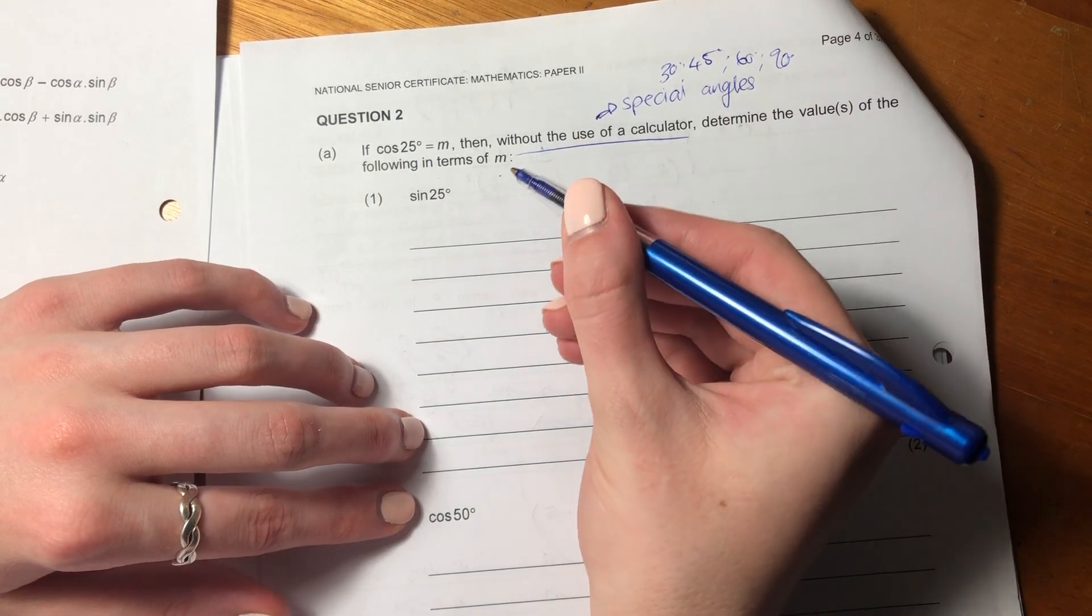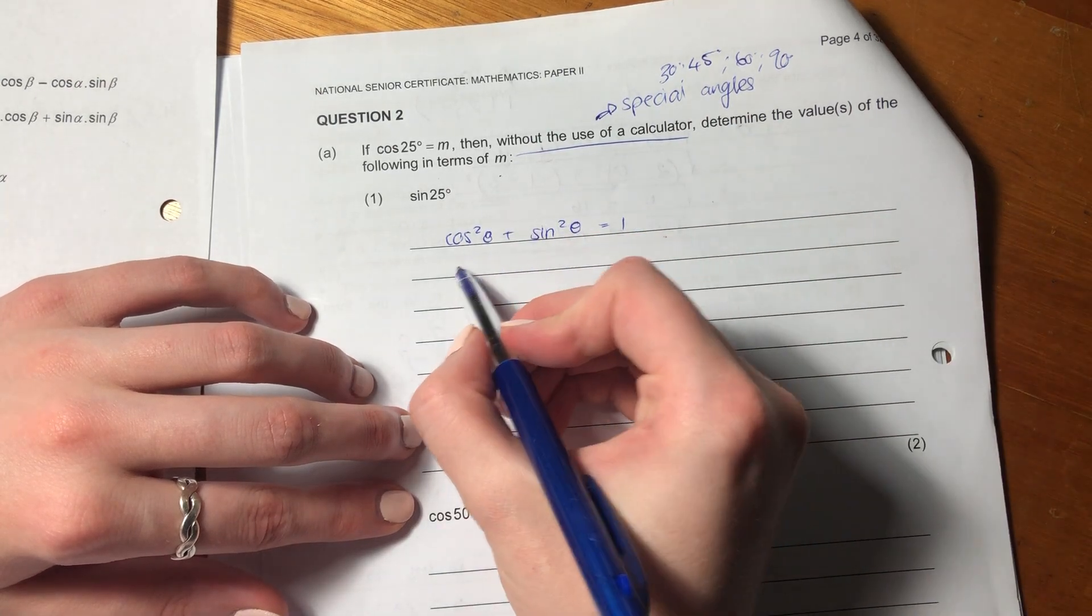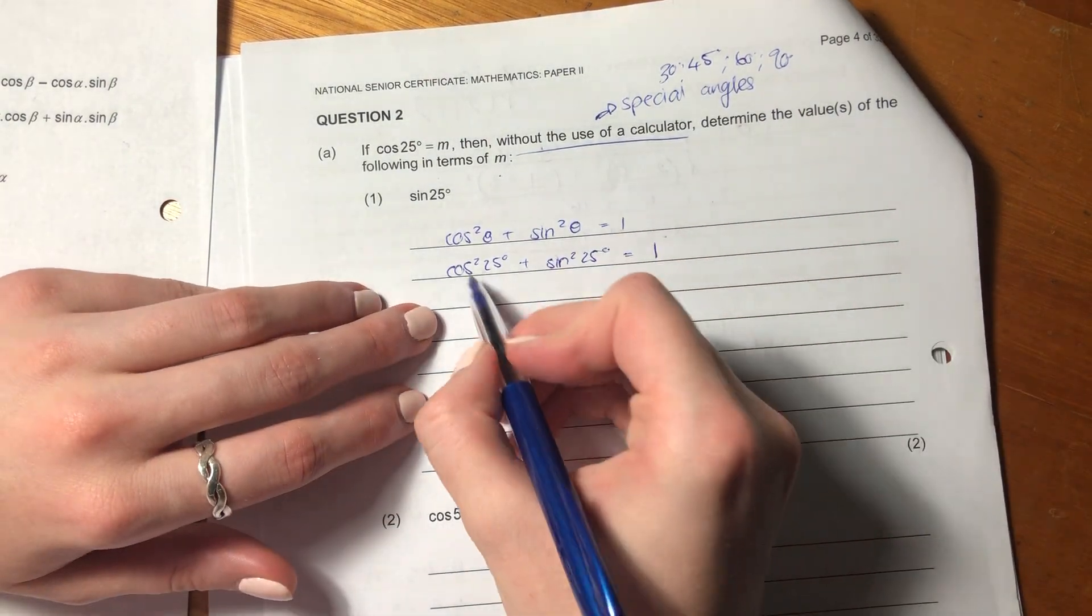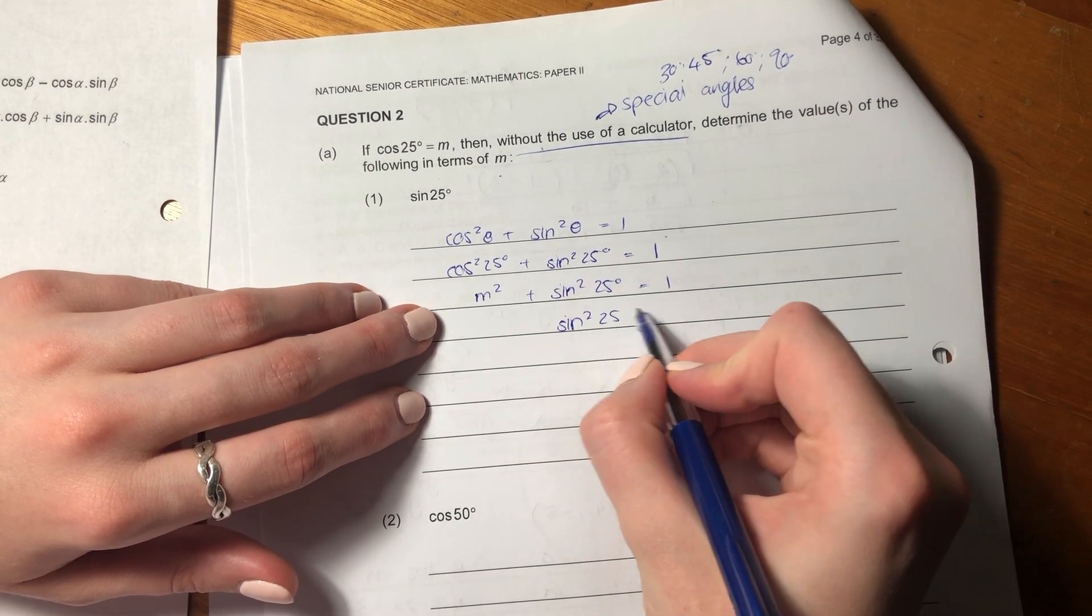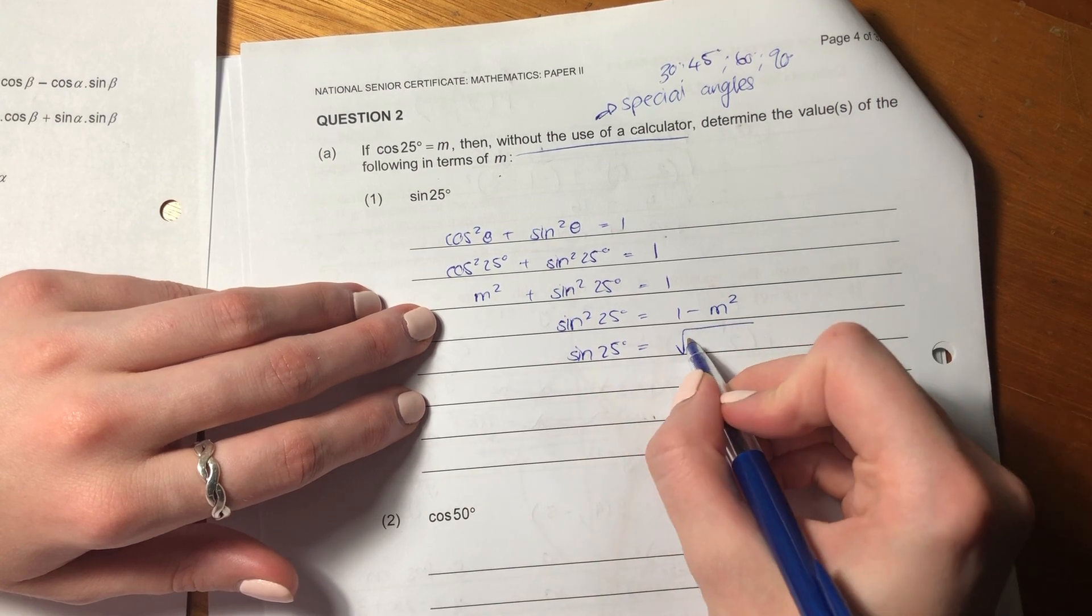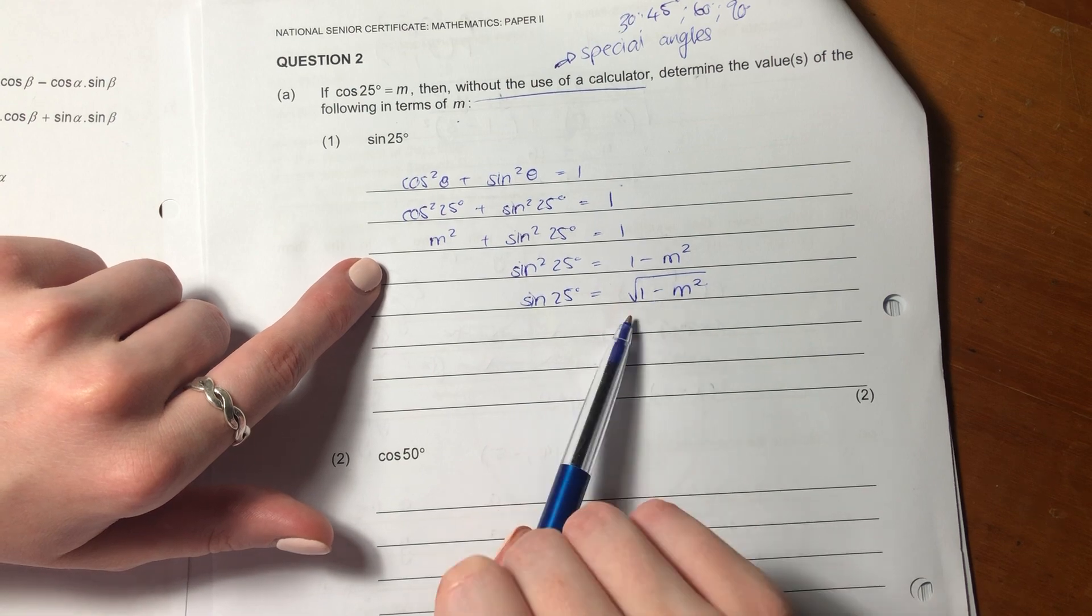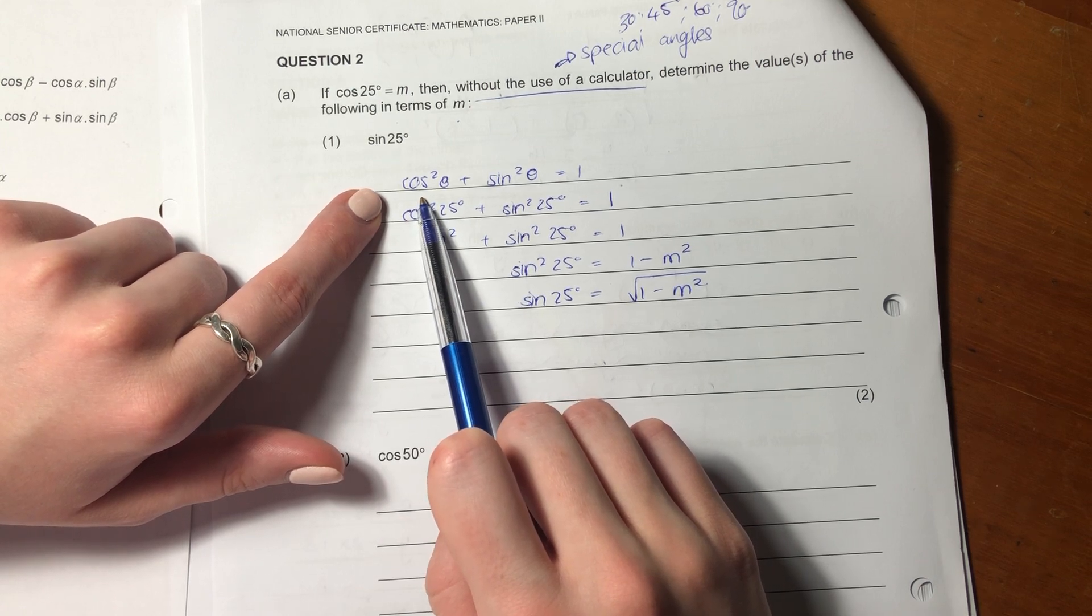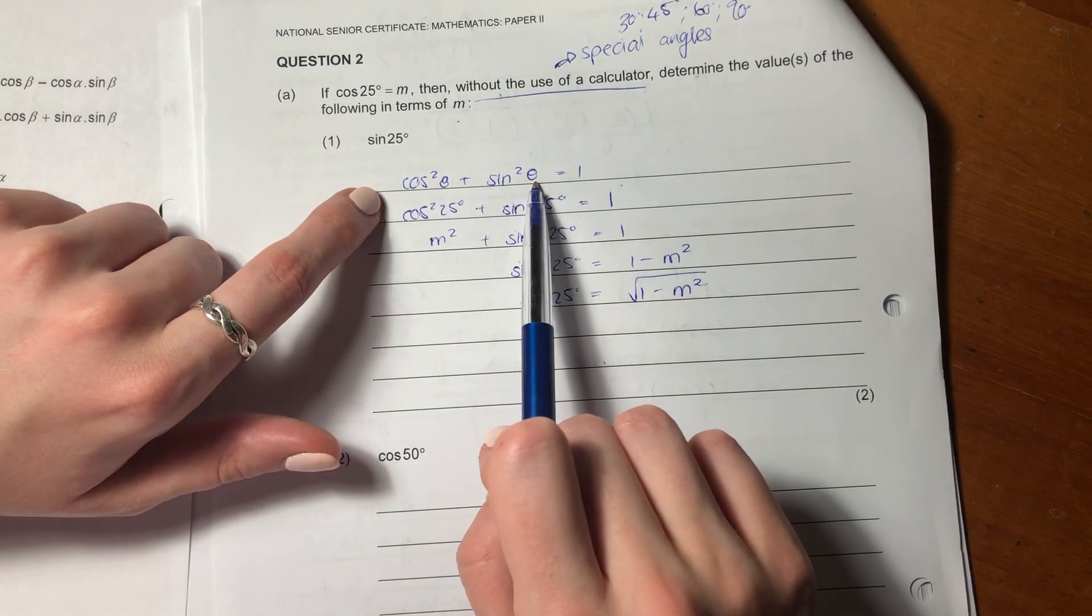So we have sin25. You should be thinking of this formula: cos squared theta plus sin squared theta equals 1. So if I make this cos squared 25 plus sin squared 25 degrees equals 1, and I know that cos25 equals m, so that becomes m squared plus sin squared 25 equals 1. Then if I solve it algebraically in terms of sin squared 25, you get an answer in terms of m. The important thing here is to know which formula to leverage and then basically algebraically manipulate it. This is not given on the formula sheet but this is something you should know. It's basically like the Pythag derivation.